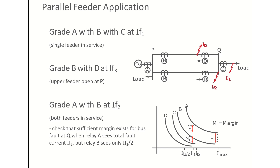Now consider a more complicated system with multiple relays installed nearer to the source, relays installed nearer to the load, and feeders connected between bus P and Q. In this type of system, we could have multiple types of faults and multiple system conditions: when only one feeder is in service, when both feeders are in service but the fault is on any one feeder, and when both feeders are in service but the fault is on the remote bus.